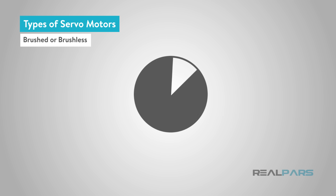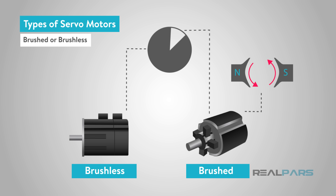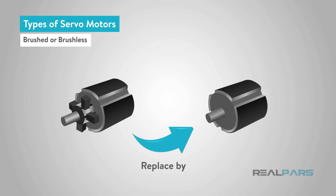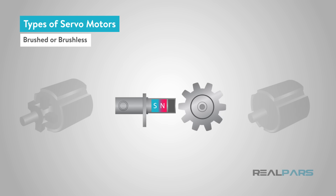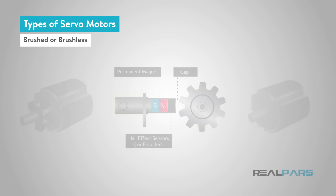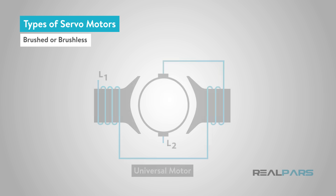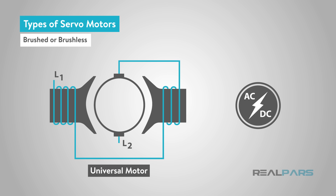While the majority of motors used in servo systems are AC brushless designs, brushed permanent magnet DC motors are sometimes employed as servo motors for their simplicity and low cost. The most common type of brushed DC motor used in servo applications is the permanent magnet DC motor. Brushless DC motors replace the physical brushes and commutator with an electronic means of achieving commutation, typically through the use of Hall effect sensors or an encoder. AC motors are generally brushless, although some designs, such as the universal motor which can run on either AC or DC power, do have brushes and are mechanically commutated.